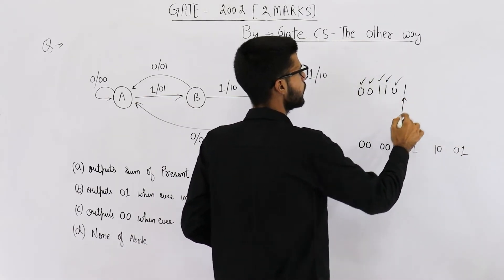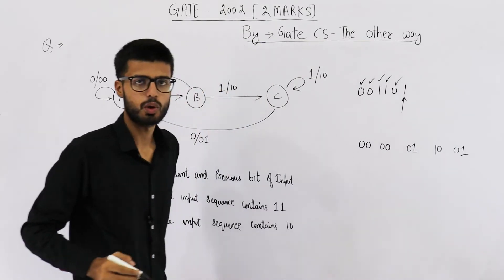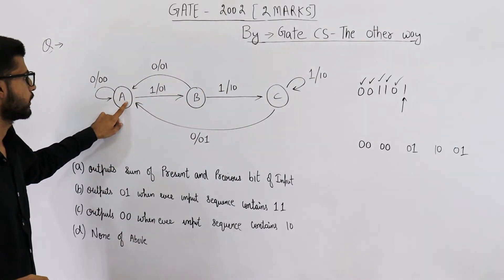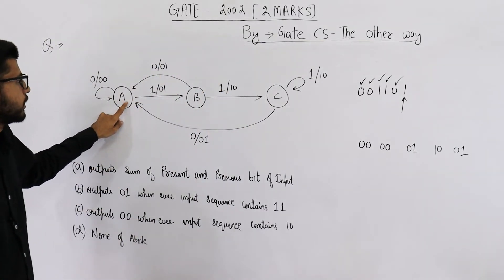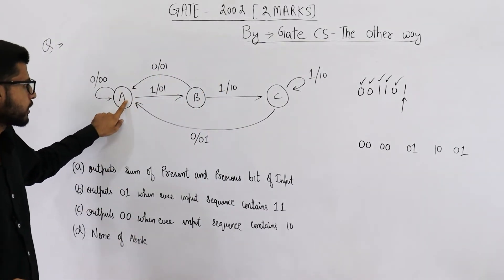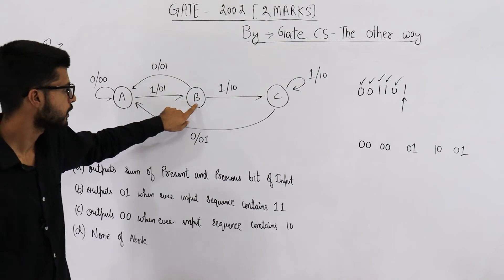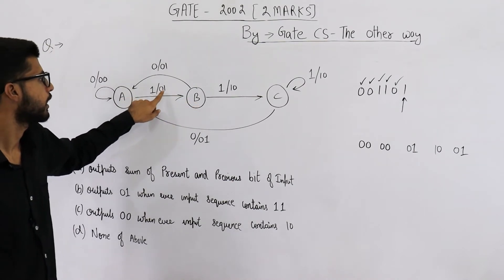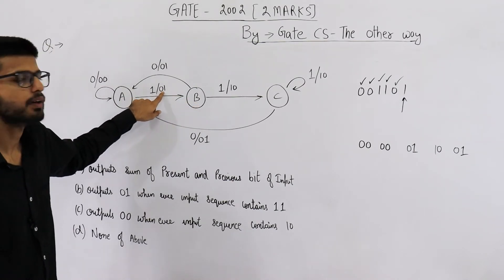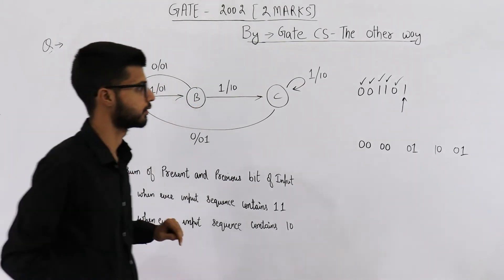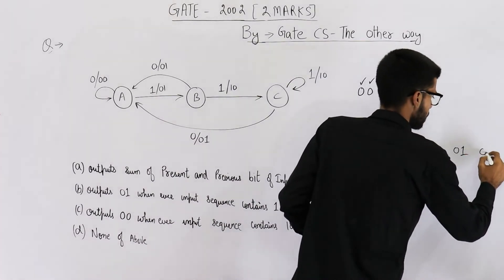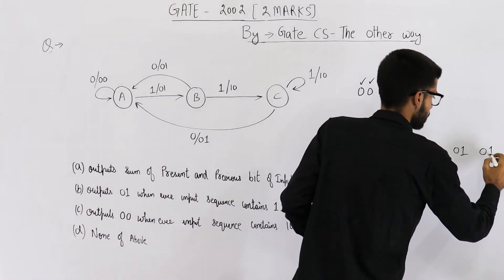Now the current bit is 1 and we are on state A. This state will go to state B upon seeing a 1, and the output printed will be 0 1.